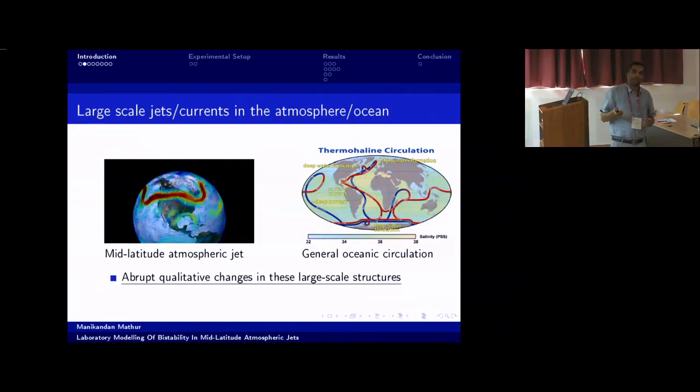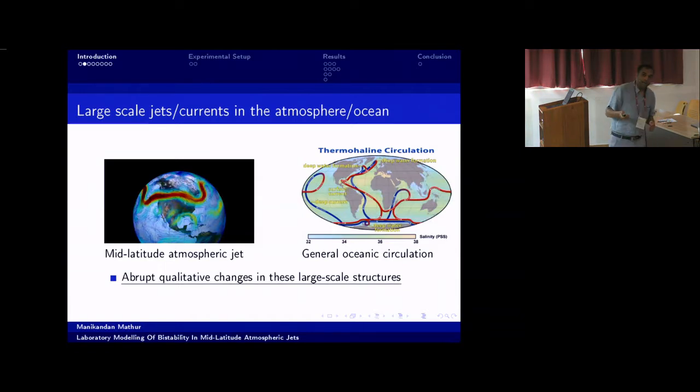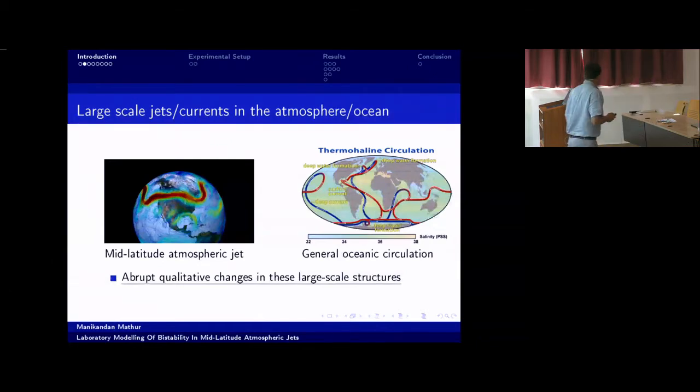What we are focused on today is not the formation mechanism of these large-scale structures, but a specific property — a phenomenon called bi-stability. Essentially, for any given set of parameters, the system has two different stable states that can persist. I'm going to specifically focus on abrupt qualitative changes in these large-scale structures.